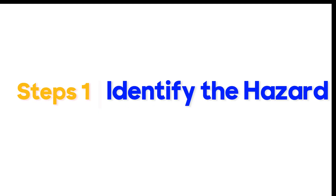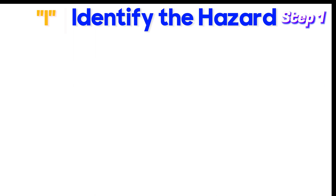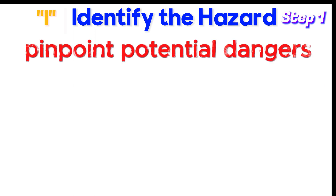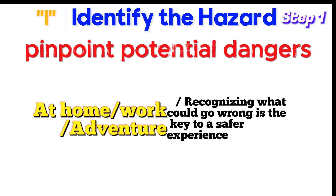Step 1: Identify the hazard. Our first step is I for identify the hazard. In this phase we need to pinpoint potential dangers. Whether you're at home, work, or on an adventure, recognizing what could go wrong is the key to a safer experience.